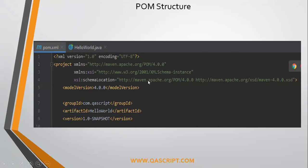So this is all about the structure of pom.xml. As we saw, Maven is more conventional — meaning you follow this convention of pom.xml and you don't need to declare your own stuff. You just follow the convention and Maven will take care of the rest of the things.